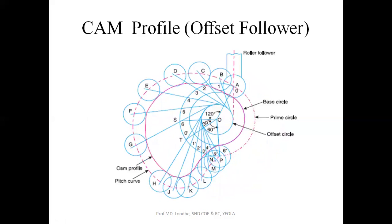Next is the offset follower. For the offset follower, the follower is offset either from the right side or left side. The procedure will be similar — the base circle and prime circle are drawn first — but here we also have to draw an offset circle.